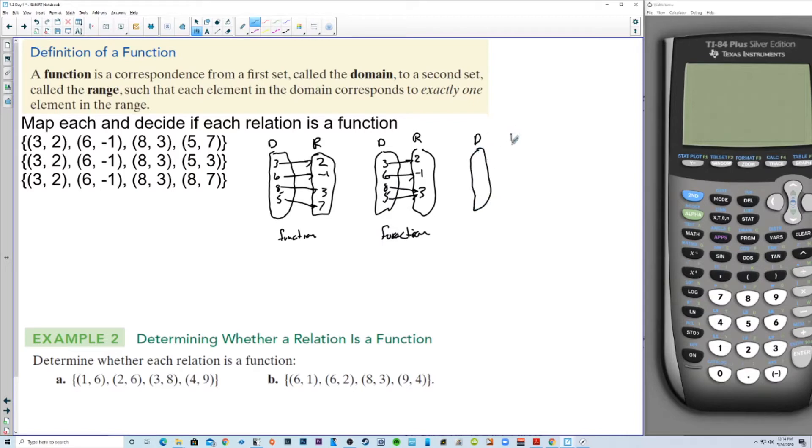Now, this last one is not going to be a function. It's only a relation. Three, six, eight, eight. Three, six, eight. And we don't write eight again. Two, negative one, three, seven. Two, negative one, three, seven is the output. So three goes to two. Six goes to negative one. Eight goes to three. Eight goes to seven. This is a relation. It is not a function because eight has two different output values.